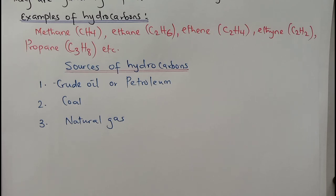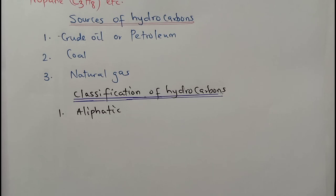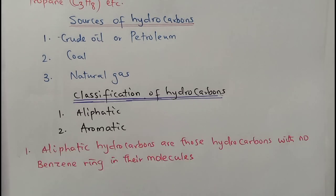Let's go for the classification of hydrocarbons. We have aliphatic and aromatic hydrocarbons. Those hydrocarbons with no benzene ring we call aliphatic, and we have two types of aliphatic hydrocarbons: alicyclic and cyclic aliphatic hydrocarbons.